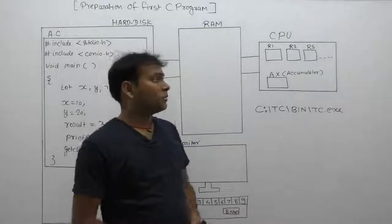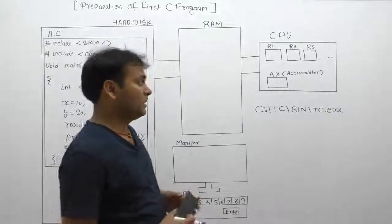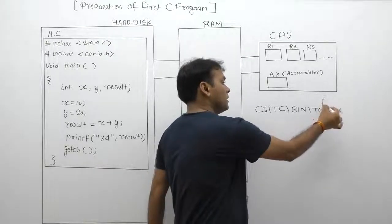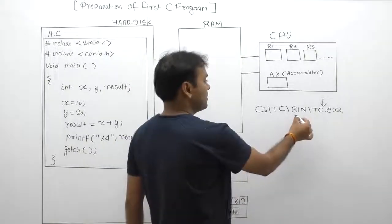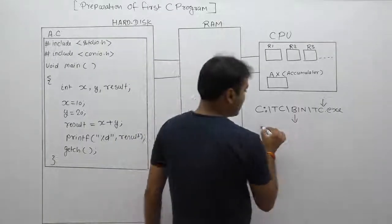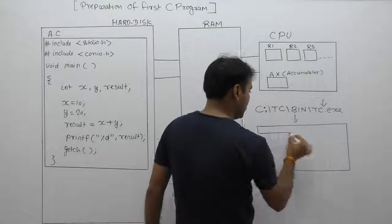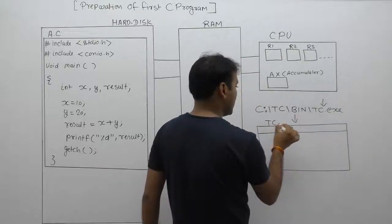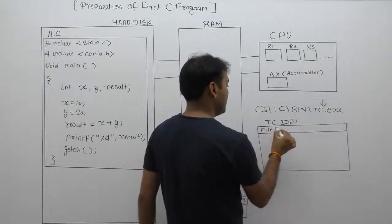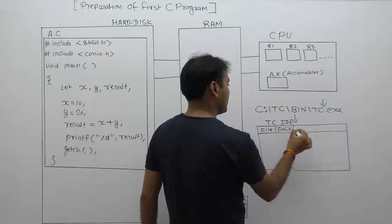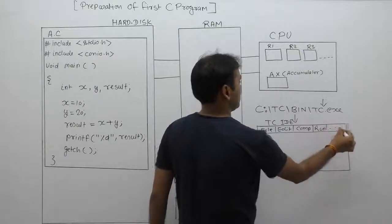First of all, we need to open the Turbo C editor. To open the Turbo C editor, simply double-click on the tc.exe file. After double-clicking on tc.exe, the Turbo C editor will open. As discussed in the previous video, the IDE has menus: File, Edit, Compile, Run, and so on.